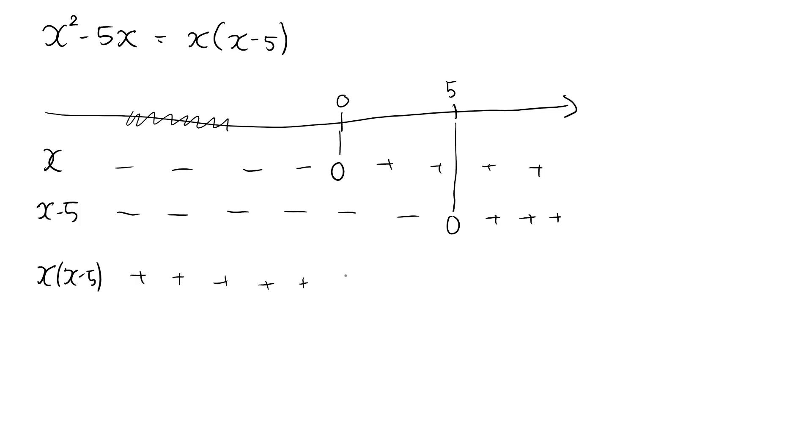Then we get to x is equal to 0. Now one of the factors is 0, and that will make the product equal to 0. Next we come to the numbers between 0 and 5. In this case, the first expression x is positive, while the second expression x minus 5 is negative. The product of a positive number and a negative number is negative, so the expression is negative in this region.